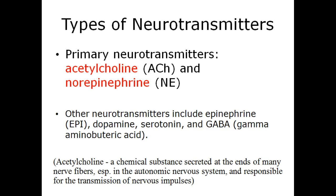The primary neurotransmitters of the ANS are acetylcholine (ACH) and norepinephrine (NE). Other neurotransmitters include epinephrine, dopamine, serotonin, and GABA. Acetylcholine is a chemical substance secreted from the ends of many nerve fibers, especially in the autonomic nervous system, and is responsible for the transmission of nervous impulses.